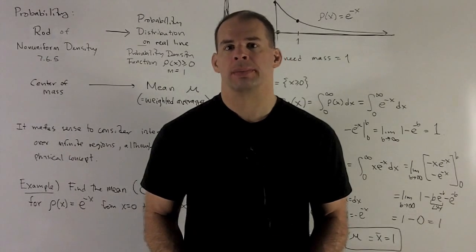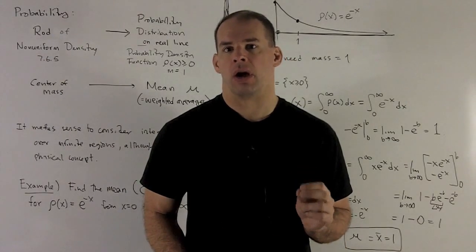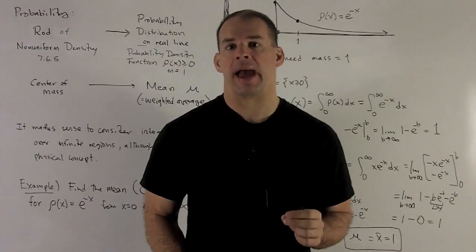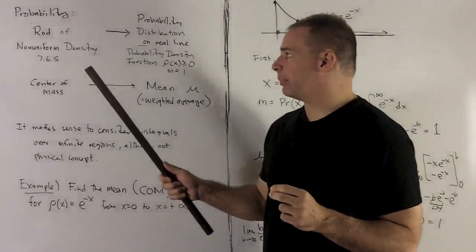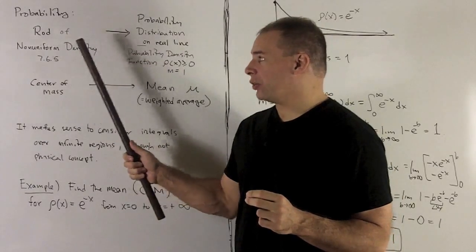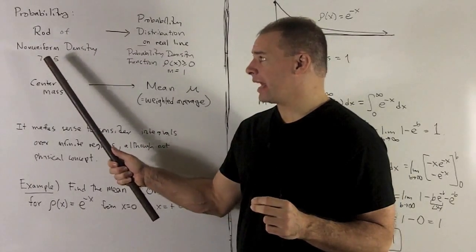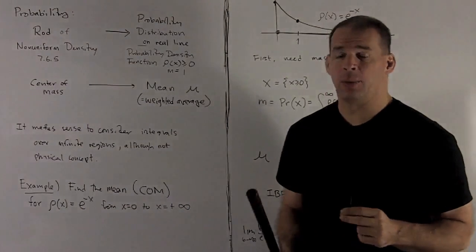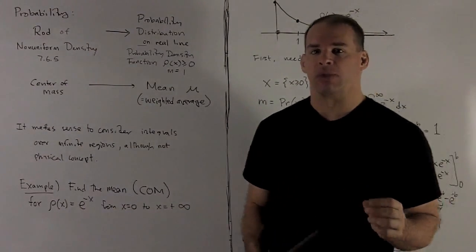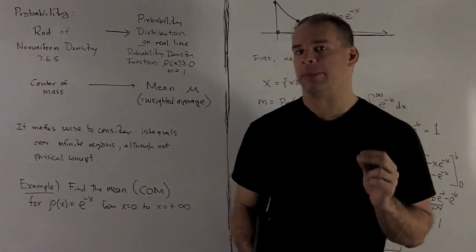Now that we have improper integrals, let's revisit the problems on moments and center of mass. So you may want to review this. This is going to be the rod of non-uniform density from calc 7.6.5. And what we're going to consider now is not going to be rods, we're going to consider probability theory.